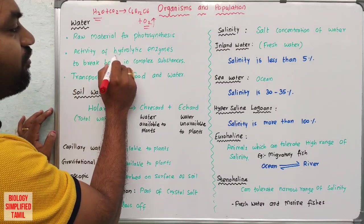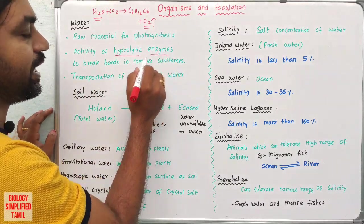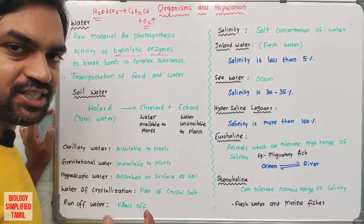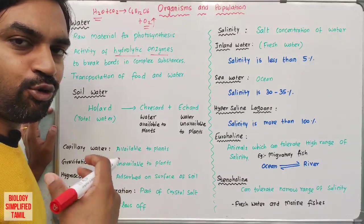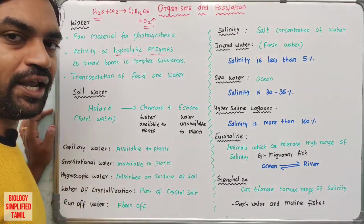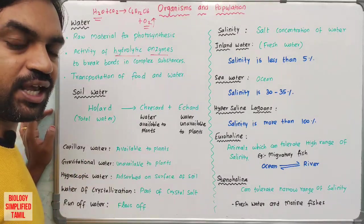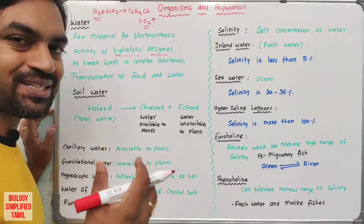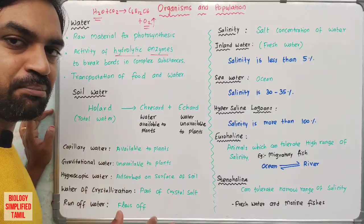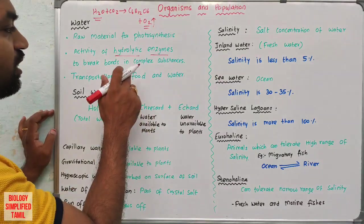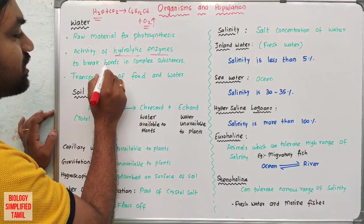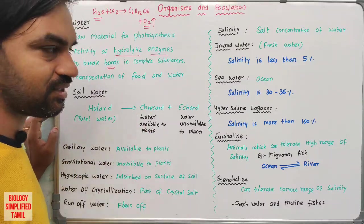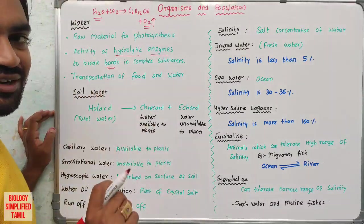Next, the activity of hydrolytic enzymes. Hydrolytic enzymes are very important for plants and animals. These enzymes use water to break complex substances into simpler substances. Water is used to remove and break down complex substances into simple substances.